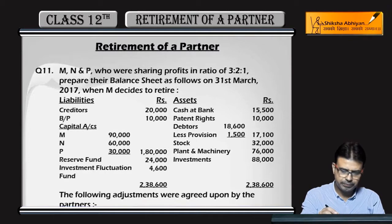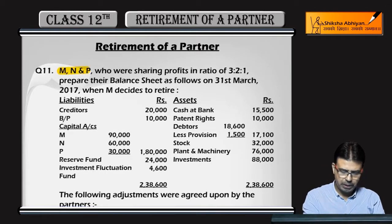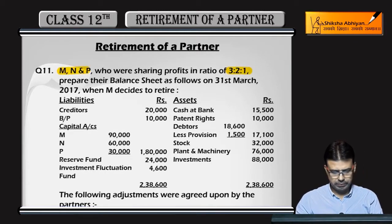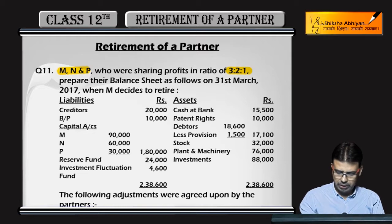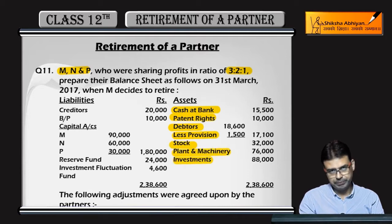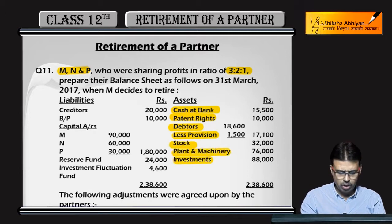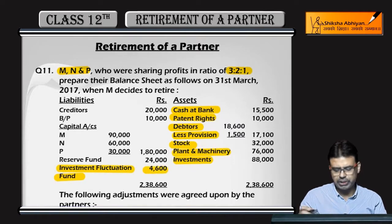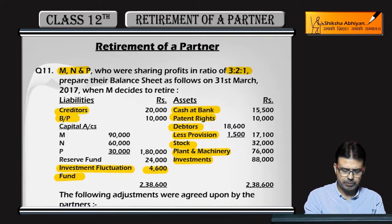Next question: MNP team partners in 3 to 1 ratio. Looking at the balance sheet, you can see cash at bank, patent rights, debtors with provision, stock, plant and machinery, investment. And here you'll notice a new item: Investment Fluctuation Fund of 46,000. Besides that, there are creditors, bills payable, and reserve fund.